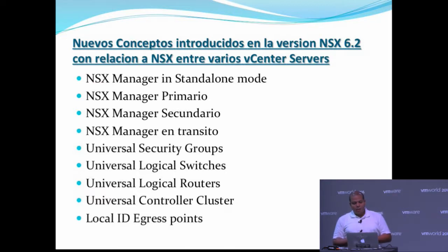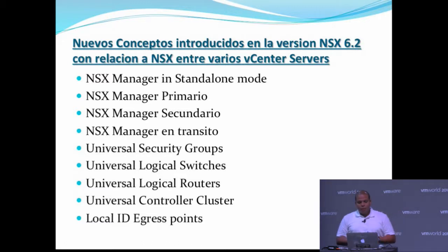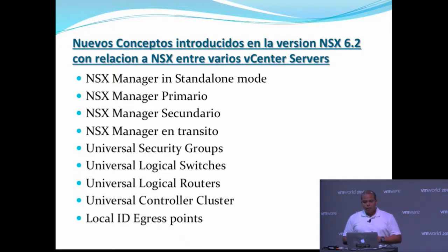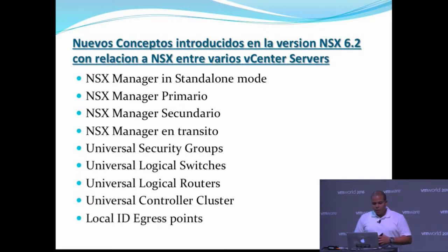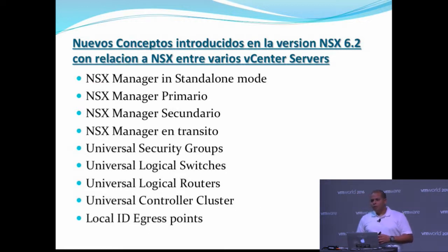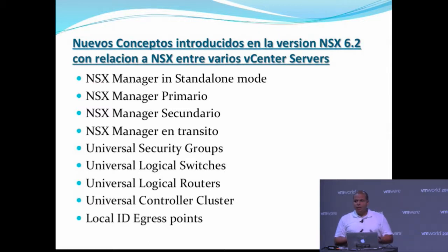In version 6.2 we also have the introduction of the concept of Universal Security Groups. These are groups that exist inside one data center and vCenter server, but are at the same time present in another. We also introduced the concept of Universal Logical Switches. In versions 6.0 and 6.1, the Logical Switches were only local — they could not expand from one data center to another, which made the administration of data centers very complex.